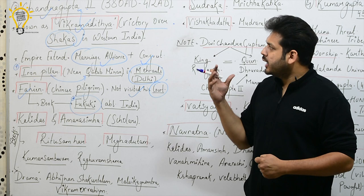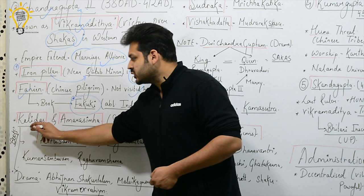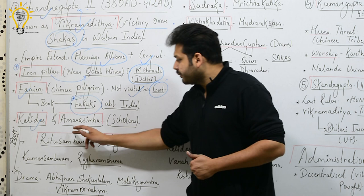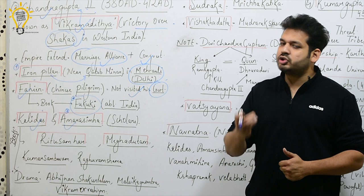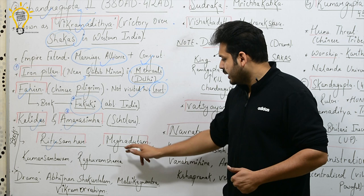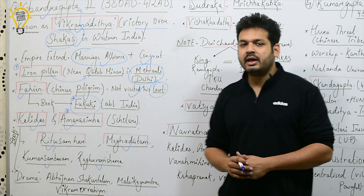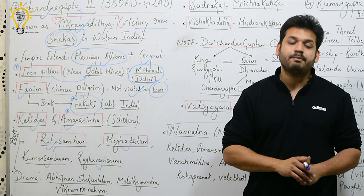During the time of Chandragupta II, there were very important scholars. One of the most famous was Kalidas. If you are asked when Kalidas lived, the answer is the time of Chandragupta II. Kalidas wrote very famous works: Ritusamhara, Meghadutam, Kumarasambhavam, and Raghuvansha. These are very important — you can be directly asked who wrote these works, and the answer is Kalidas.